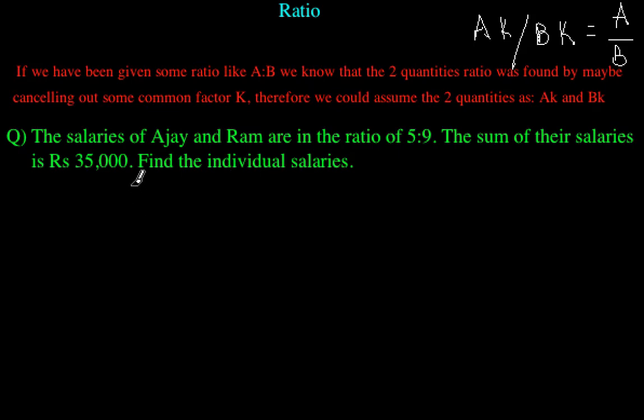Now we have been given a question from the same concept. The question states the salaries of Ajay and Ram are in the ratio of 5 is to 9. So we could assume that the salary of Ajay is 5K for some K, and Ram it would be 9K, so that the ratio is 5 is to 9. Now we have been given the sum of their salaries is Rs. 35,000. We have to find the individual salaries, so 5K plus 9K is nothing but 35,000.